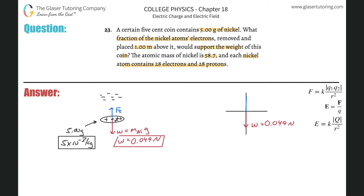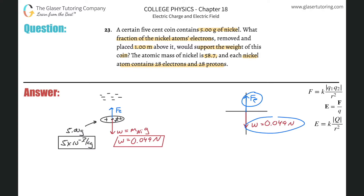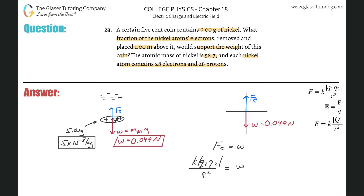This electrostatic force F sub E has to balance the weight — if the coin is to float, the coin is supported. So the electrostatic force equals the weight of the nickel. Expanding: F sub E equals K times Q1 times Q2 divided by the distance squared, equal to the weight. They tell us the electrons are placed 1.00 meter above, so R equals 1.00 meter. K is 8.99 times 10 to the ninth, and we already know the weight.